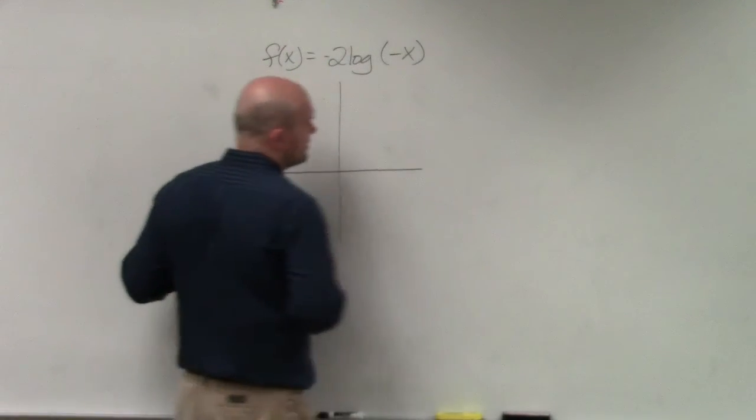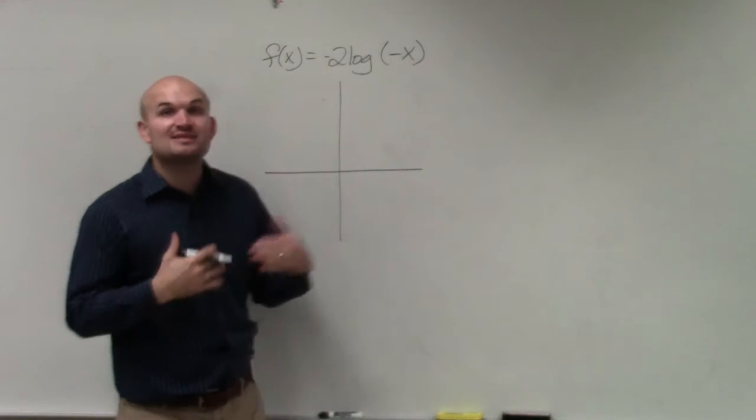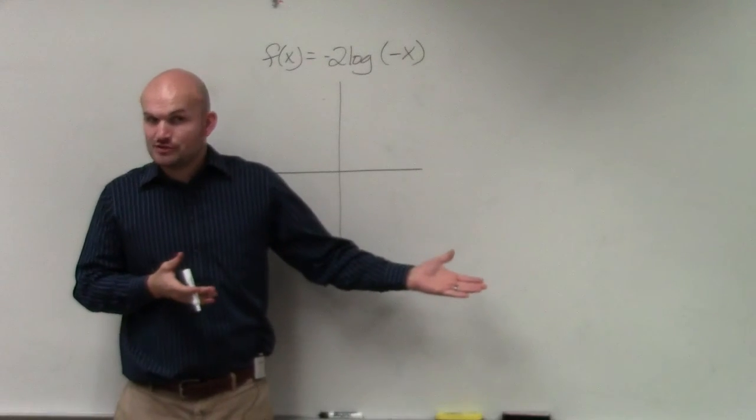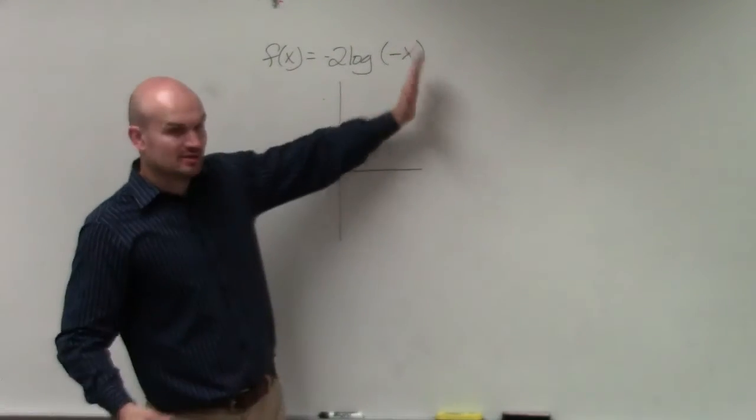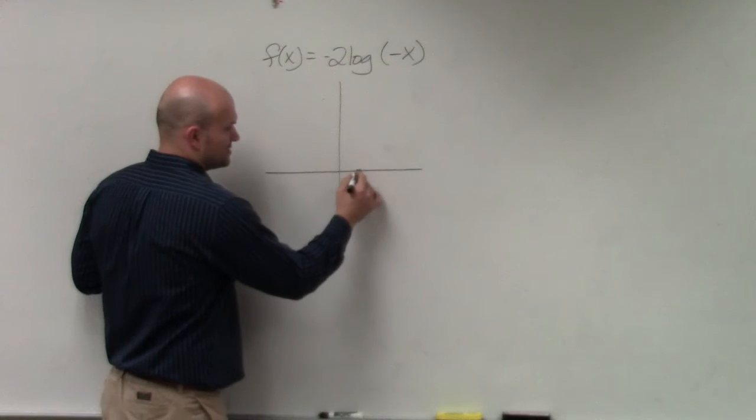So if you guys remember, the graph of the logarithmic graph was the inverse of the exponential graph. Where the exponential growth looked like this, this graph looks like this.